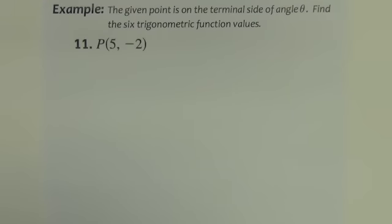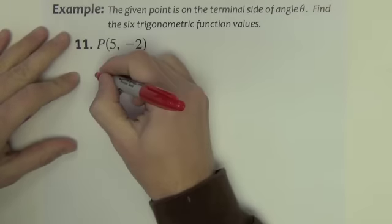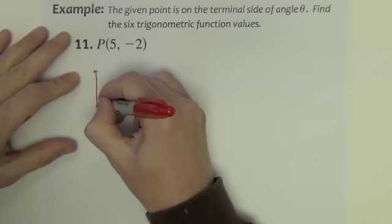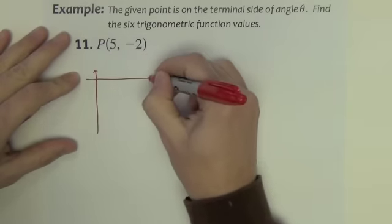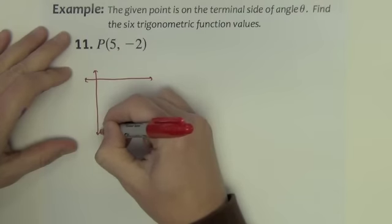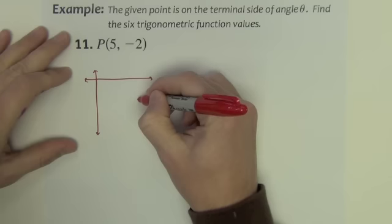Next one. The given point is on the terminal side of angle theta. Find the six trigonometric function values. Same type of problem. If you want to go ahead and sketch a graph of this, you can. This one plots 5 to the right, 2 down.